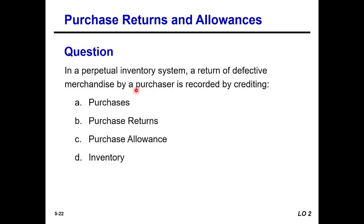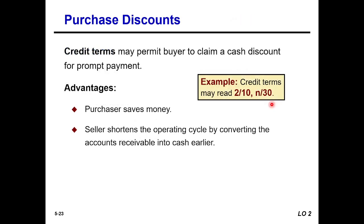Test question: Under a perpetual inventory system, a return of defective merchandise by the purchaser is recorded by crediting which account? As shown in the previous slide, Inventory will be credited. Under the perpetual inventory system, a return of defective goods results in a credit to Inventory.